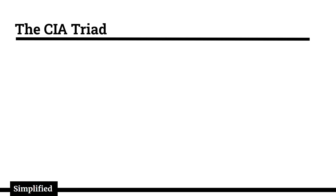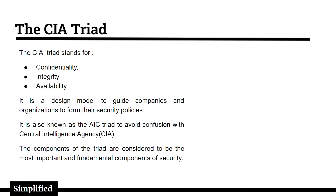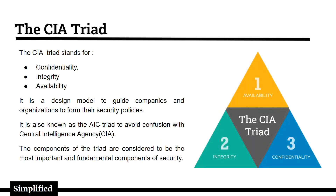The CIA Triad stands for Confidentiality, Integrity, and Availability. It is a design model used to guide companies and organizations in forming their security policies. It is also known as the ICK Triad to avoid confusion with the Central Intelligence Agency. The components of the triad are considered the most important and fundamental components of security.